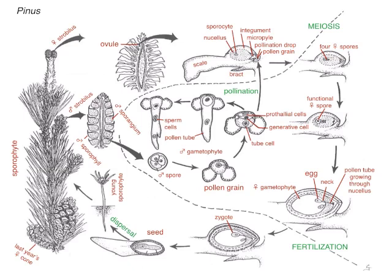That makes a zygote, and then it still has to grow a while. The zygote grows and makes an embryo. That embryo is inside of a megagametophyte, and the megagametophyte is inside of the mother sporophyte's seed coat, which has a wing in many pine trees. So it's a two-n structure inside of a one-n structure inside of a two-n structure. And that is all I have to say about that. Thank you.